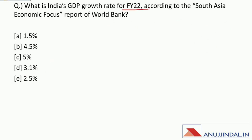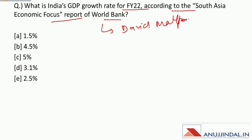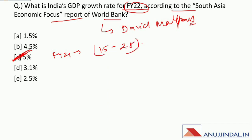What is India's GDP growth rate for financial year 2020? According to the South Asia Economic Focus Report of the World Bank — headed by David Malpass — for financial year 2022 the GDP growth rate of India is 5%. For financial year 2021, this report has predicted a GDP growth range of 1.5% to 2.8%.